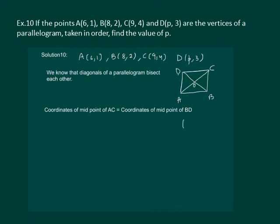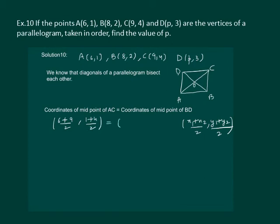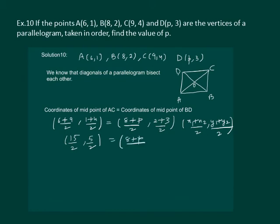Let us recall the midpoint formula: (x1 + x2)/2 and (y1 + y2)/2. Using this midpoint formula, the coordinates of the midpoint of AC are (6 + 9)/2 and (1 + 4)/2, which is 15/2 and 5/2. The coordinates of the midpoint of BD are (8 + P)/2 and (2 + 3)/2, which is (8 + P)/2 and 5/2.